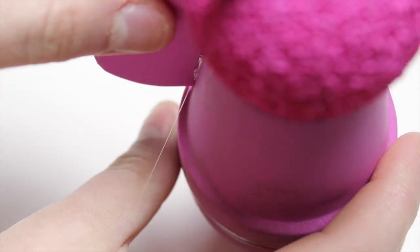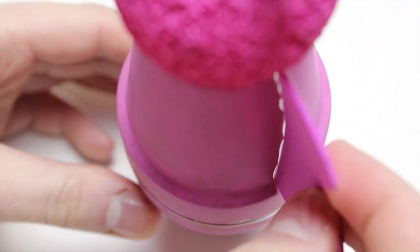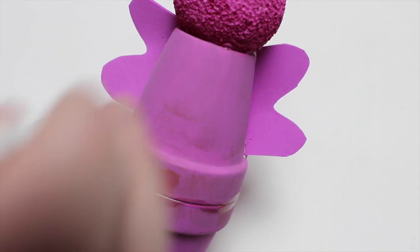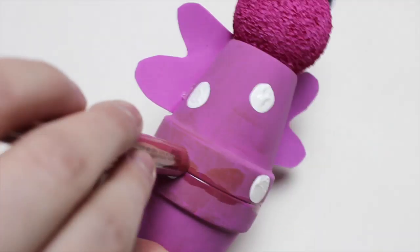Now take some glue and apply it to the edges of the wings and glue them to the sides of the flowerpot. Lastly, add white polka dots all around the body of the butterfly with white acrylic paint.